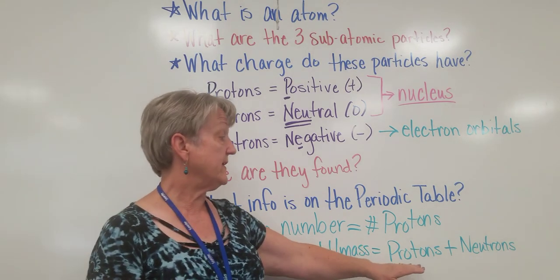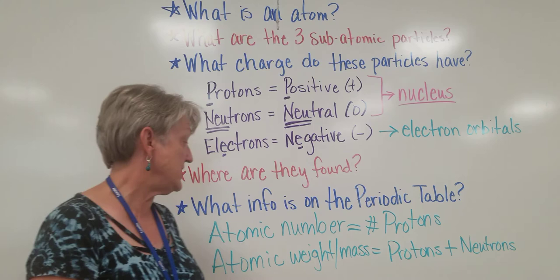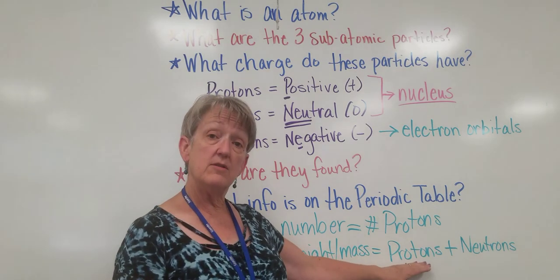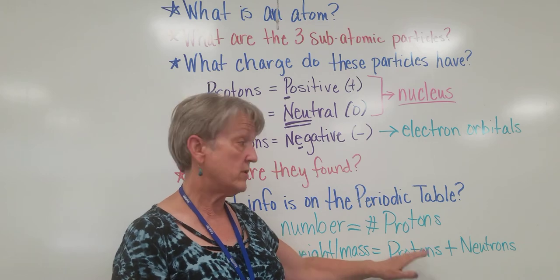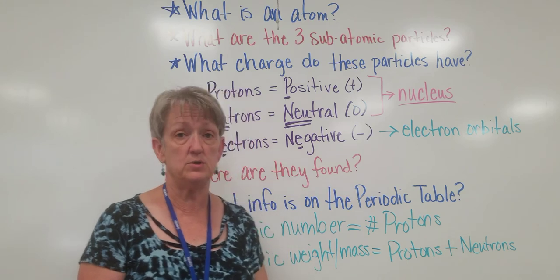If we are trying to find out how many neutrons an atom has, we can take the atomic weight and subtract the protons or the atomic number, the number of protons, and we will find out how many neutrons.